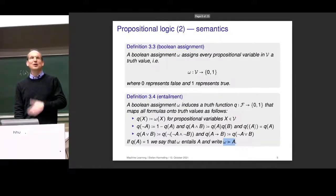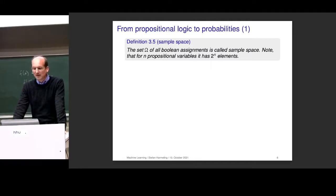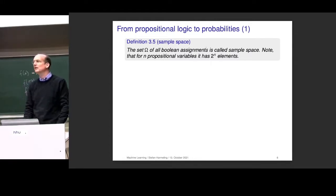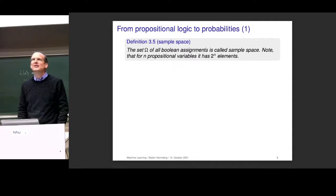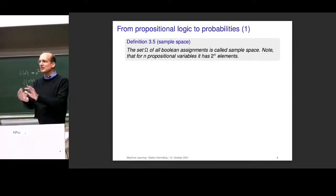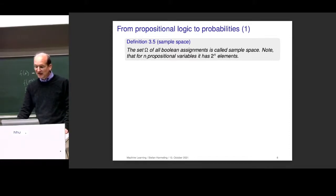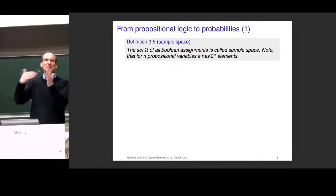Let's switch to probabilities. Logic has two things — syntax and semantics — and now we swap to probabilities. There are these Boolean assignments, these omegas, and we can talk about the set of all possible Boolean assignments, which is called the sample space. We are only talking about finitely many variables, so everything is great. For n propositional variables, the sample space would have 2^n elements, because there are 2^n bit strings you could assign to n variables.